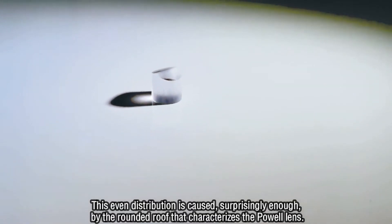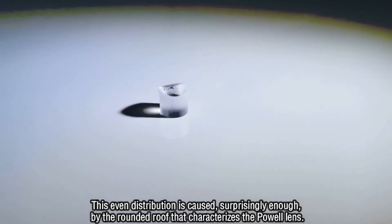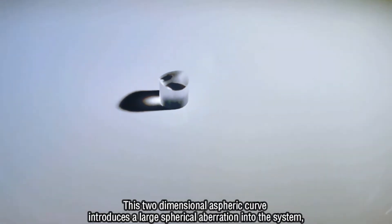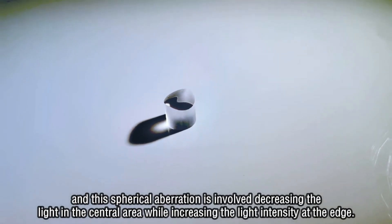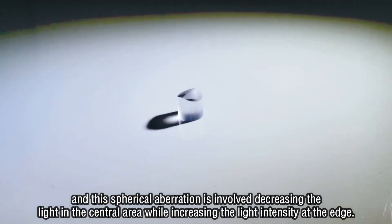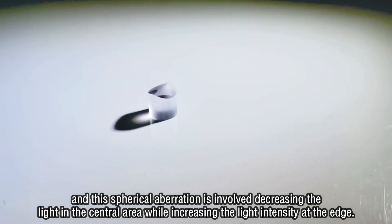This even distribution is caused, surprisingly enough, by the rounded roof that characterizes the Powell lens. This two-dimensional aspheric curve introduces a large spherical aberration into the system, and this spherical aberration is involved in decreasing the light in the central area while increasing the light intensity at the edge.